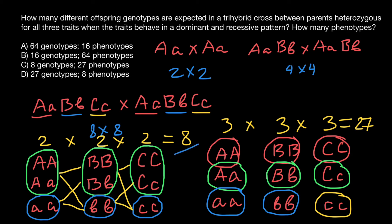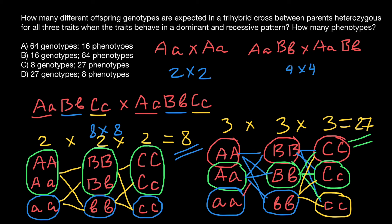So our answer is eight distinctive phenotypes and 27 different genotypes in the progeny. For example, combining genotypes across two genes gives several variants, and extending to three genes gives all 27 combinations. We don't have to write down all the connections and list every genotype — we can simply calculate that there are 27 different genotypes and eight different phenotypes.